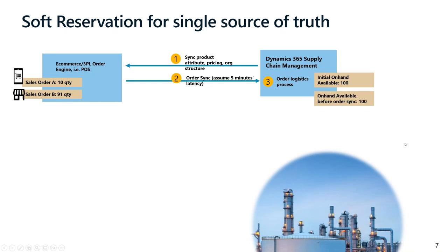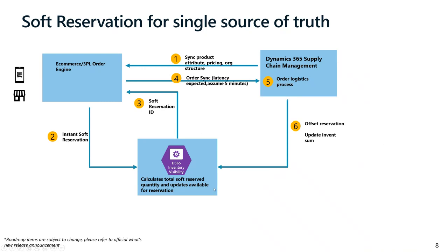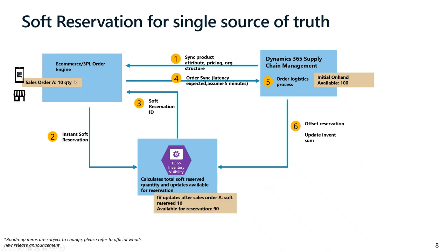To solve this problem, let's see how Inventory Visibility can play a part. Introducing Inventory Visibility in between the same flow: initial on-hand is 100 and the first order asks for 10 quantities, instantly triggering a soft reservation request into Inventory Visibility asking to soft reserve 10. Inventory Visibility Service processes this, reserves 10, and updates the available-for-soft-reservation calculated measure to 90. When the second sales order comes in asking for 91 quantities, the soft reservation request will fail because there is not enough quantity. This is how we minimize overbooking to the greatest extent by leveraging Inventory Visibility in between.